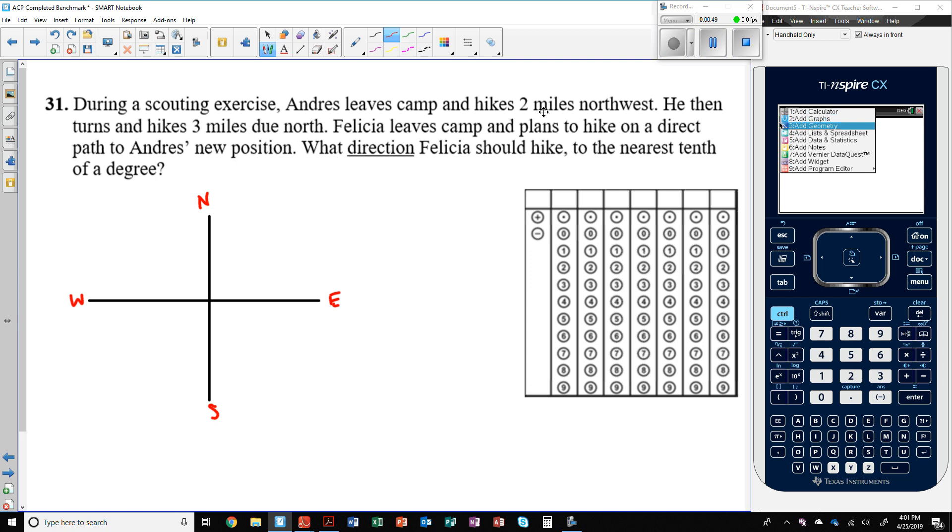It says here he hikes two miles northwest. So two miles northwest. How would we represent that? Northwest is going to split north into the west, and so it goes this way right in between them. So this would be two miles here.